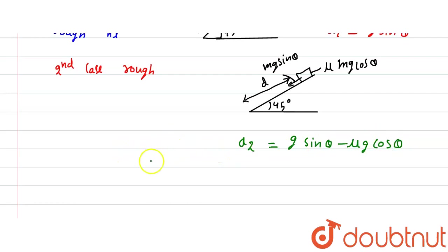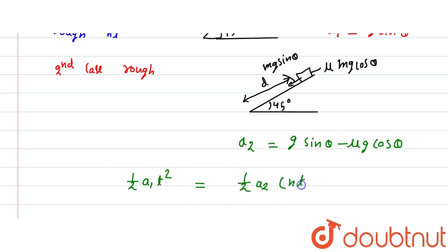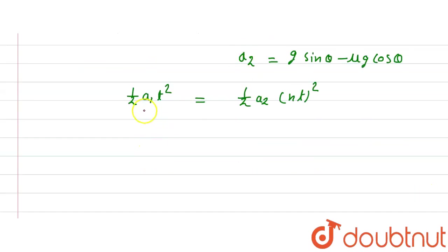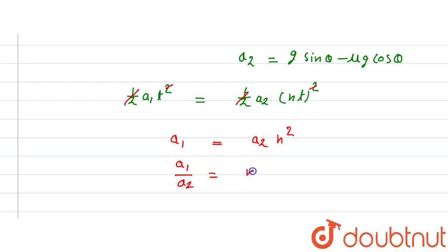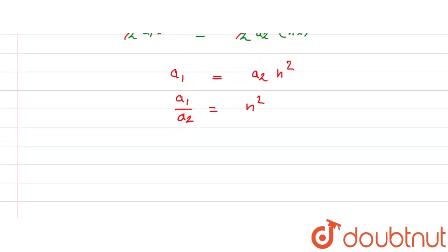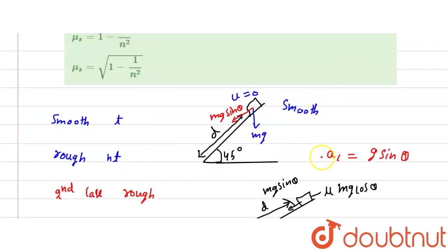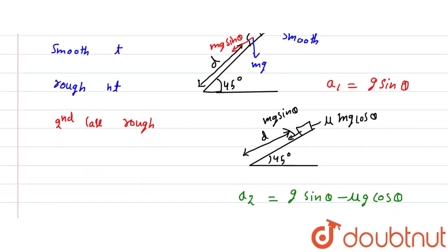Using s = ½at² for the same distance d: ½a1·t² = ½a2·(nt)². The halves cancel, and simplifying gives a1/a2 = n². We now substitute the values of a1 and a2.